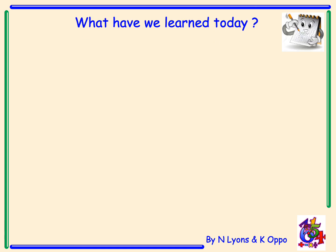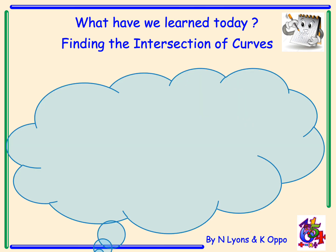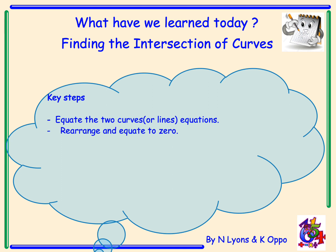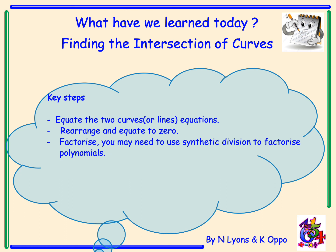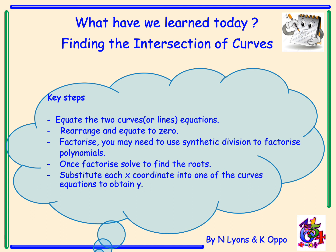What have we learned today? Today we've looked at the intersection of curves. Key steps are: equating the two curves' equations; rearranging and equating to zero; factorising — synthetic division may need to be used to factorise any polynomials. Once we factorise, we solve to find the roots or x-coordinates of the points of intersection, and then substitute each x-coordinate into one of the curves to obtain the y-coordinates.